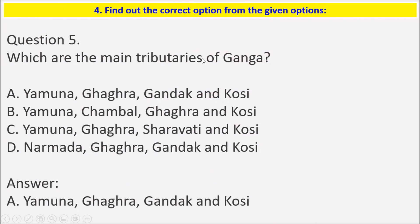Next question: Which are the main tributaries of the Ganga? The main tributaries of the Ganga are Yamuna, Ghaggar, Gandak, and Koshi.